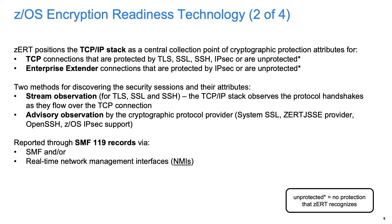There are two ways that ZERT collects the cryptographic attributes of a connection. The first is called stream observation. When a TCP connection is established, ZERT will start watching byte by byte the traffic that flows over the connection. The stack observes just long enough to determine if there is a TLS or SSH handshake. If it recognizes one, it collects the information it needs about the handshake and stops. If it doesn't recognize one, it will stop immediately — for a short period of time for performance reasons.